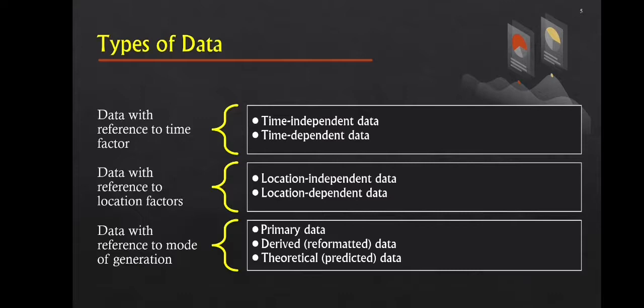The next type is data with reference to nature of quantitative values. It has two classes. First is determinable data — data on a quantity that can be assumed to take a definite value under a given condition. Time-dependent data are normally determinable data if the defined condition includes the concept of time. Second is stochastic data, which refers to data about a quantity that takes fluctuating values from one sample to the next. In the geosciences, the vast majority of data is stochastic.